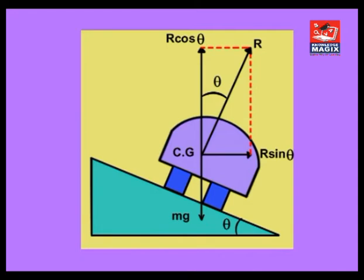While taking a turn, the forces acting on the vehicle are its weight mg acting in vertically downward direction and normal reaction R between the vehicle and the road acting at right angles to the road surface.